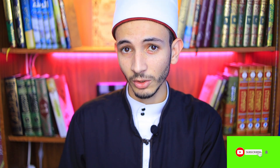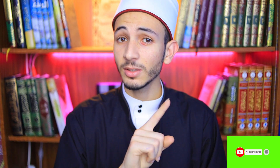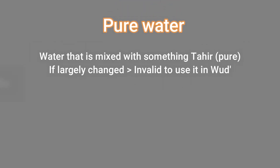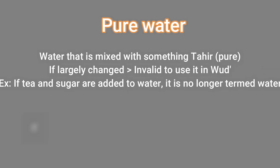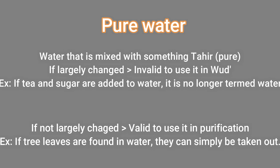The water itself is still pure — it's tahir, meaning pure in itself, but it doesn't purify others. The pure water can also be identified in another way: it's the water that is mixed with something else that is pure, such as flour or saffron. Here we have two cases. The first case: if it's largely changed so it's no longer termed water, it is still tahir, but you cannot use it to make wudu. But if it's only slightly changed with flour, saffron, tree leaves, or something that is pure, it's fine — you can still use it to make wudu or ghusl, just like purifying water.